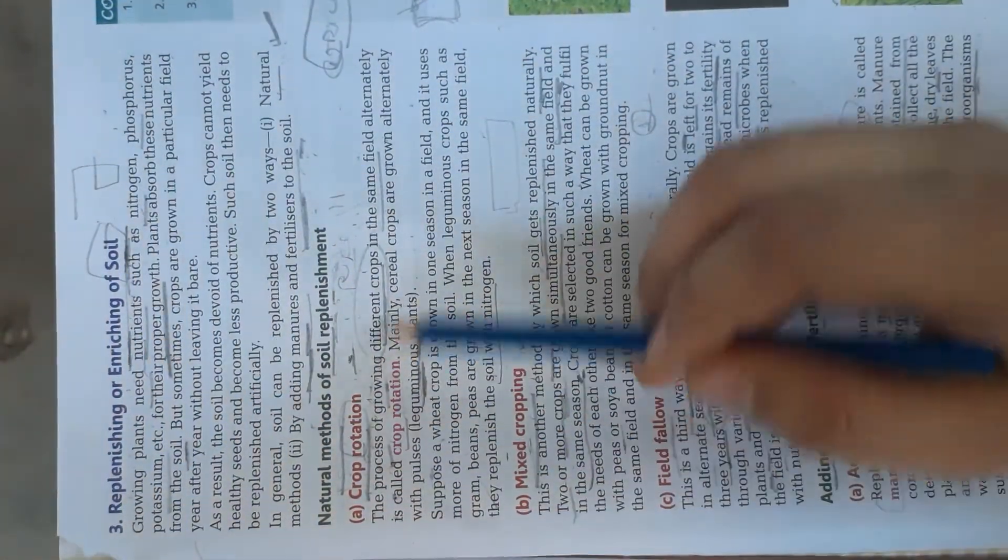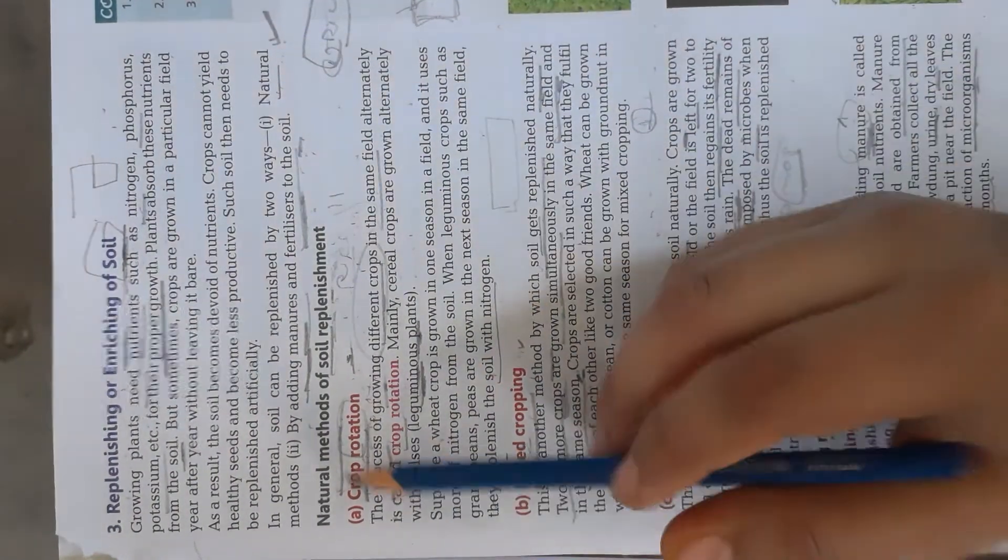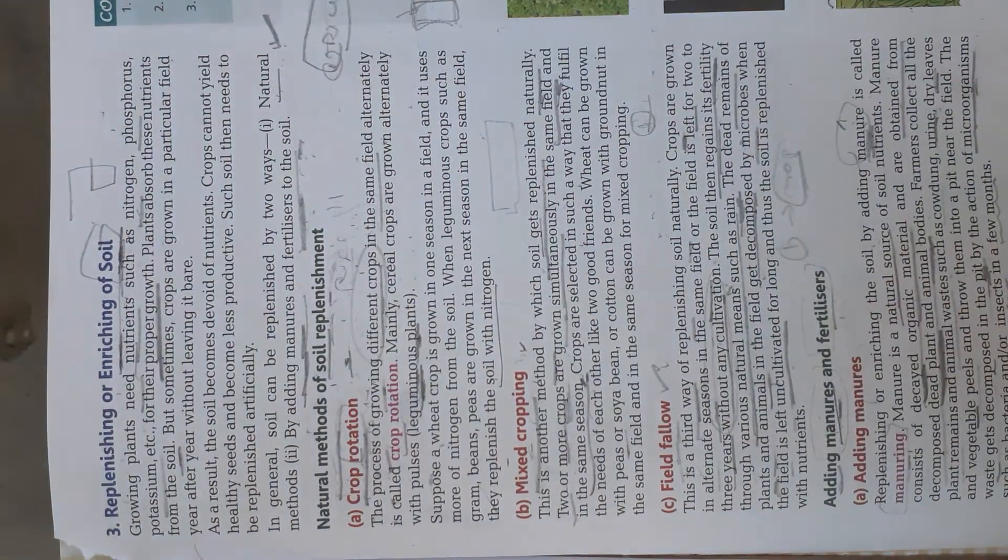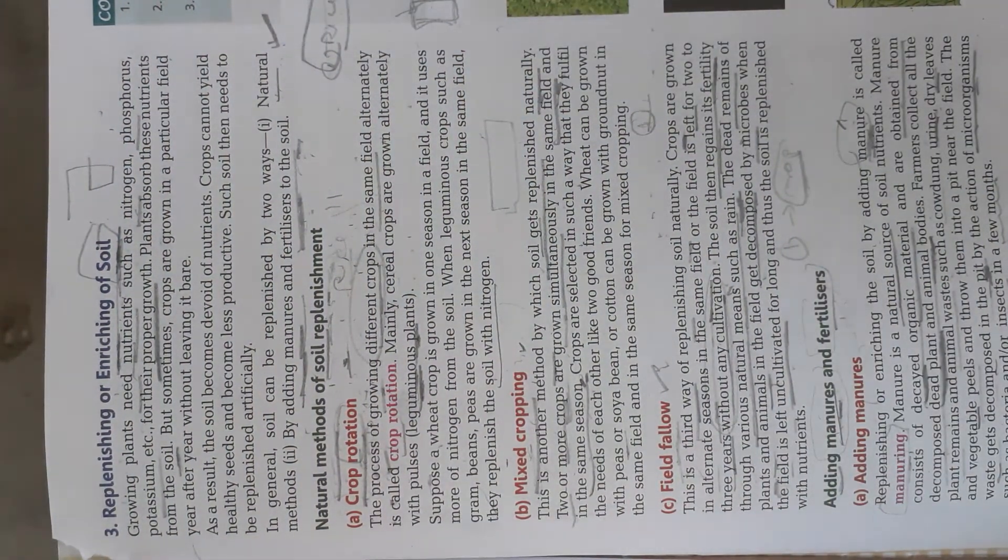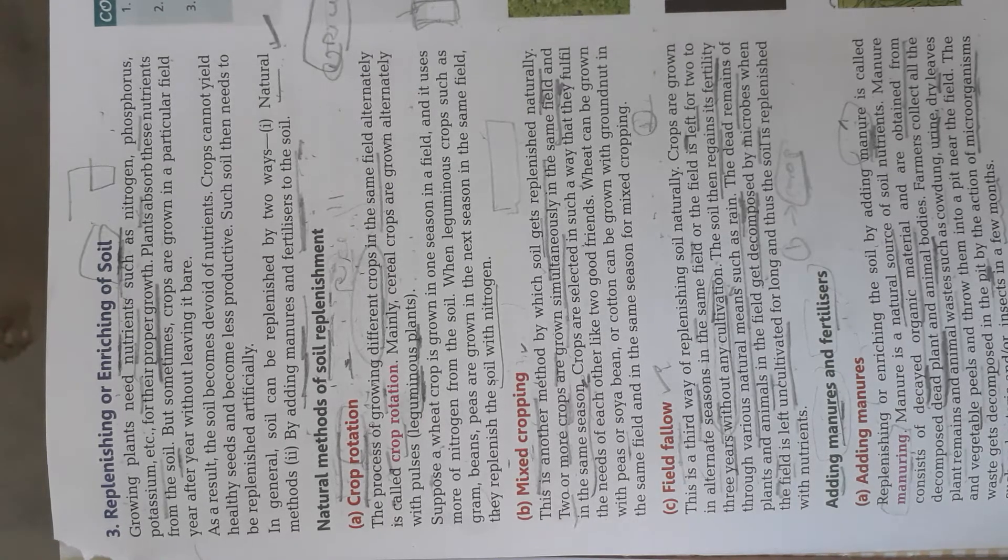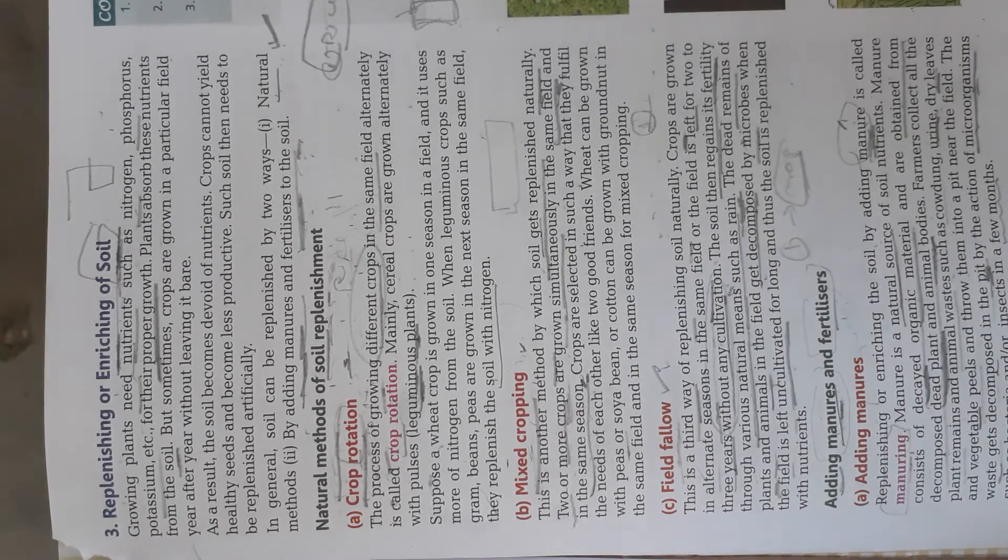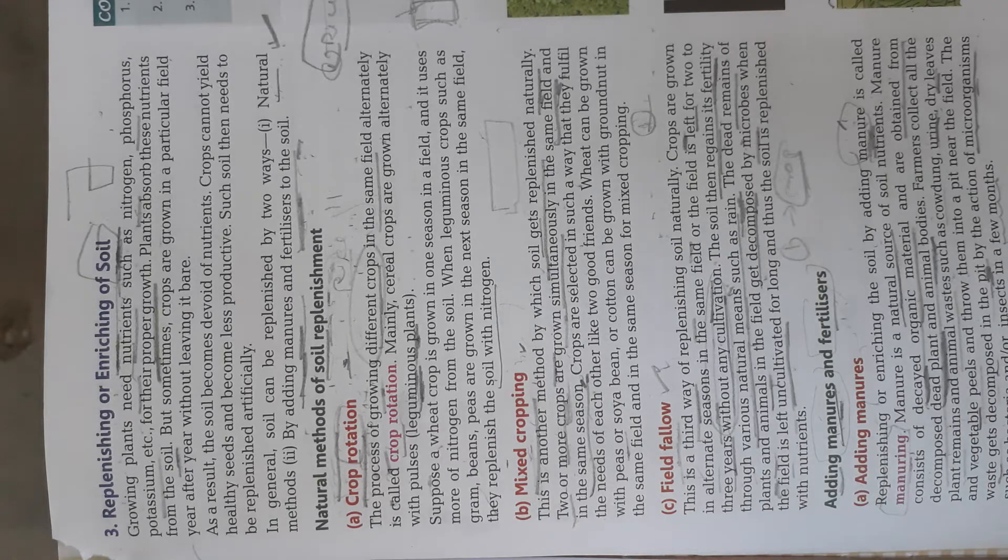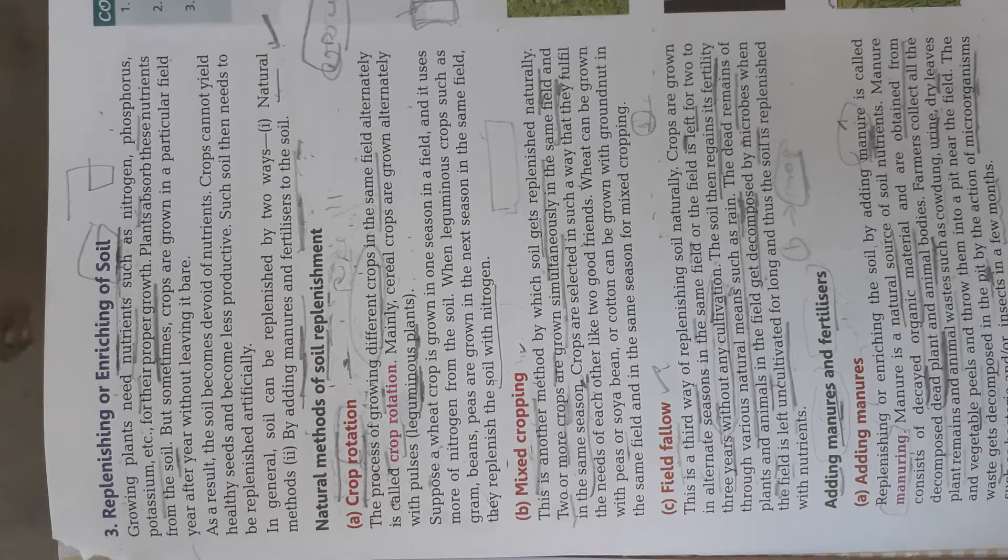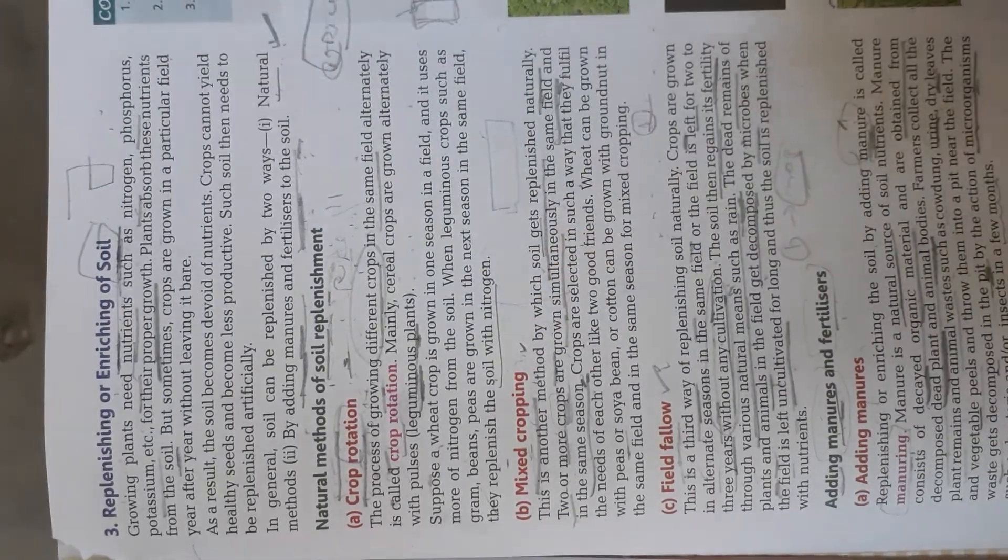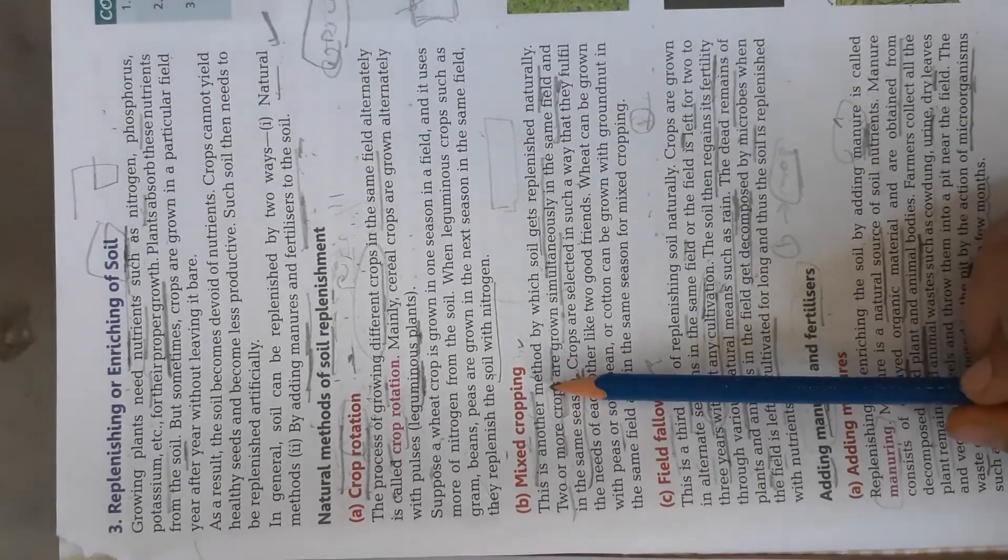Now let us move to a new topic: how the soil gets nutrients. It includes two methods: first natural, second artificial. In natural, we do crop rotation, mixed cropping, or field fallow. Again I am revising you: crop rotation means rotation of crops and different types of crops grown in the same field. It is known as mixed cropping.